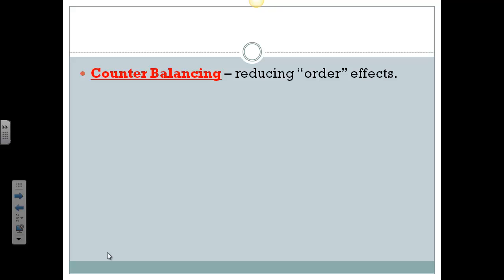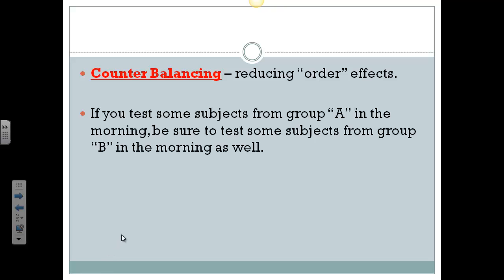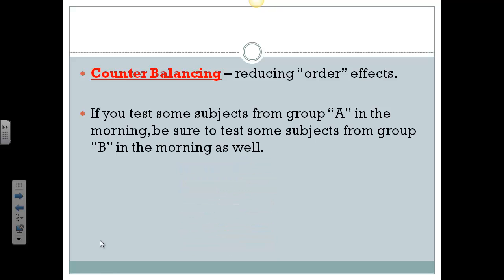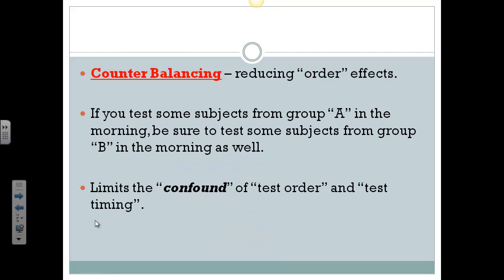Counterbalancing is how we can break down confounding variables by reducing order effects. So if you test some subjects from Group A in the morning because that's when the research room is available, you can't test all of the experimental group in the morning and all the control group in the afternoon. You split it up and balance it — some of the control group in the morning, some of the experimental group in the morning, some in the afternoon — because that cancels out the effects of early versus late testing. Time, in this case, then wouldn't be a factor. It limits the confound of test order.